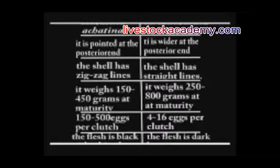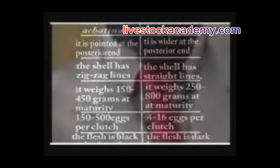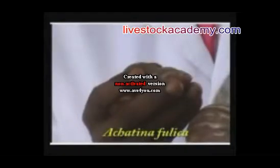It has no definite coloration — we cannot easily distinguish by color alone. Just look at the shell at the posterior end: Achatina marginata is wider at the posterior end. The third species is Achatina marginata. This species has a lined shell at the posterior, and is not as wide as Achatina fulica.